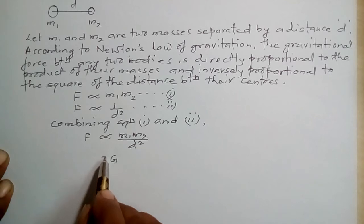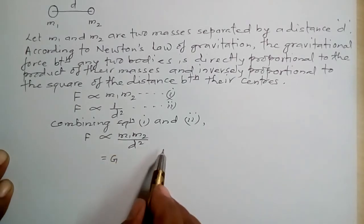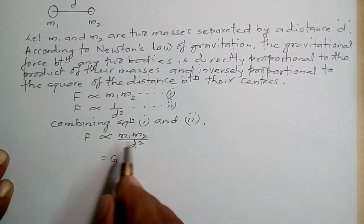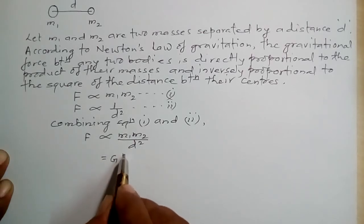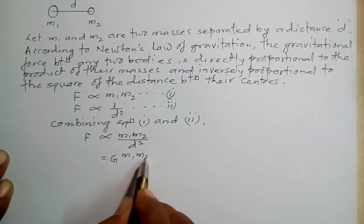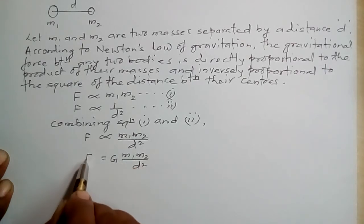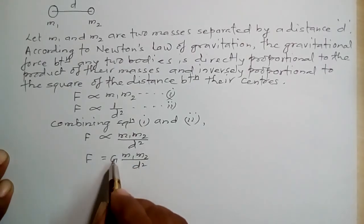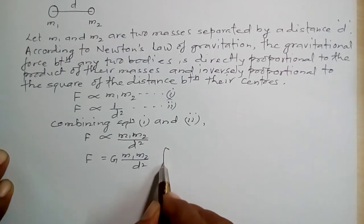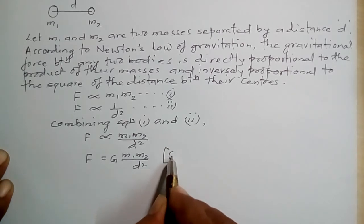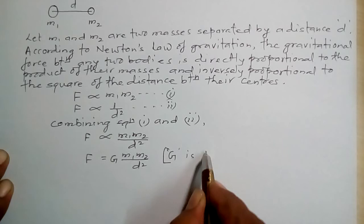If quantities are proportional to each other, then there must be a constant. That constant is taken as G, called the gravitational constant. If we convert the proportional sign into an equal sign, we have to introduce the constant between them, which is the gravitational constant G.